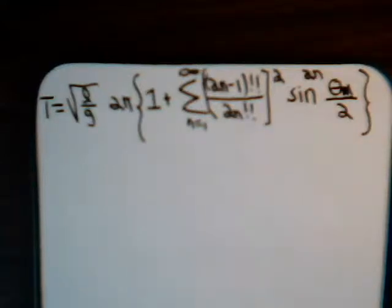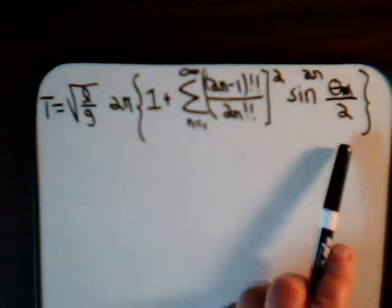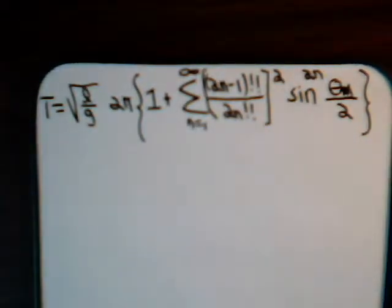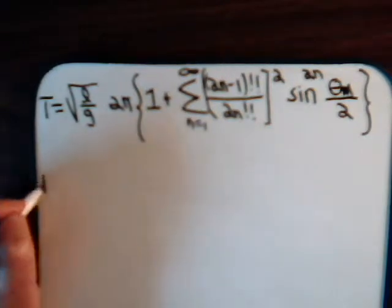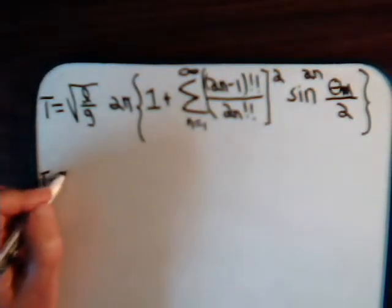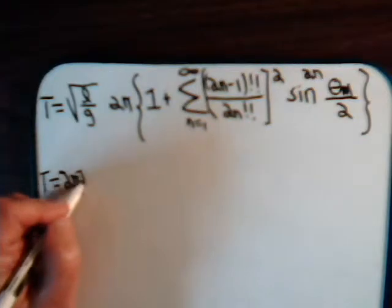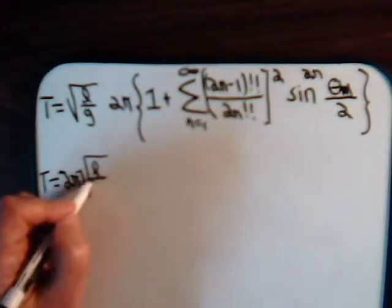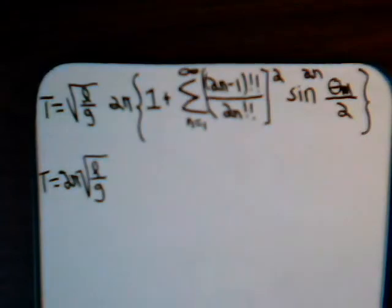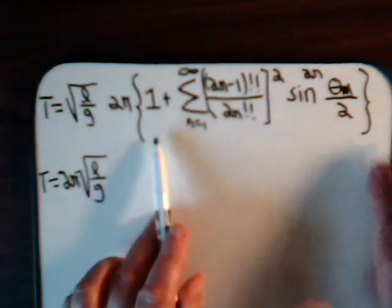In the previous video, we derived an equation that describes a pendulum not just for small angular displacements but for any displacement. Let's consider the first few terms to understand what this means. We have T equals 2π times the square root of L over g, and we have this series to consider.